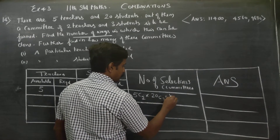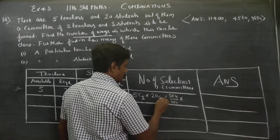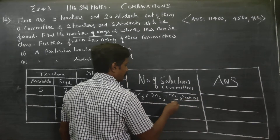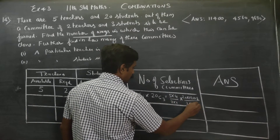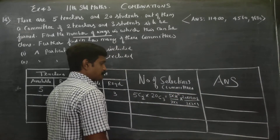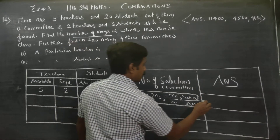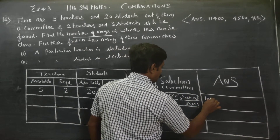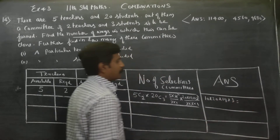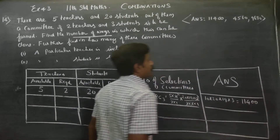5C2 can be written as 5 into 4 by 2 into 1. 20C3 can be written as 20 into 19 into 18 by 3 into 2 into 1. After cancellation, the answer will be 5 into 10 into 20 into 19 into 3, giving 11400 as your answer.